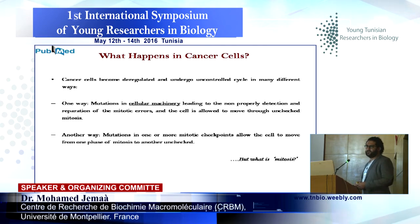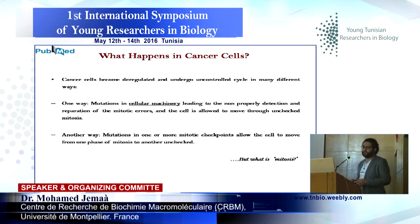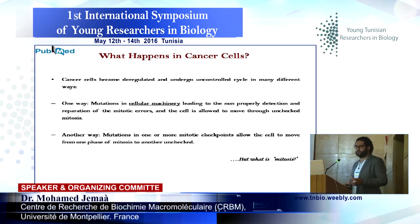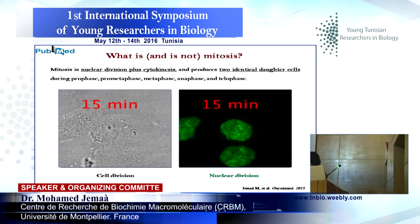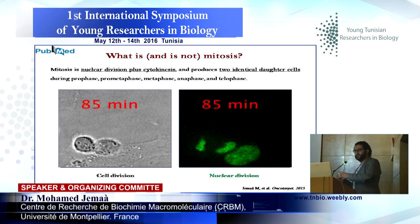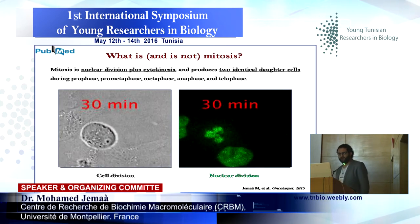So, what happens in cancer really? Cancer cells become deregulated and undergo uncontrolled cycles in many ways — maybe mutations in cellular machinery leading to non-proper detection and repair of mitotic errors, allowing the cell to move through defective mitosis, or mutations in one or more mitotic checkpoints, allowing the cell to move from one phase to another without control. So, what really is mitosis? Mitosis is nuclear division plus cytokinesis, producing two identical daughter cells.